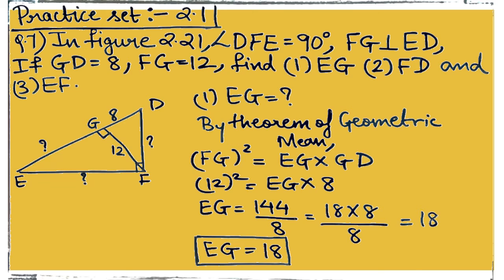Question 7: in the figure, angle DFE = 90 degrees. From the 90-degree vertex F, a perpendicular FG is drawn towards the hypotenuse ED. GD = 8, FG = 12. We need to find: first EG, then FD, then EF.